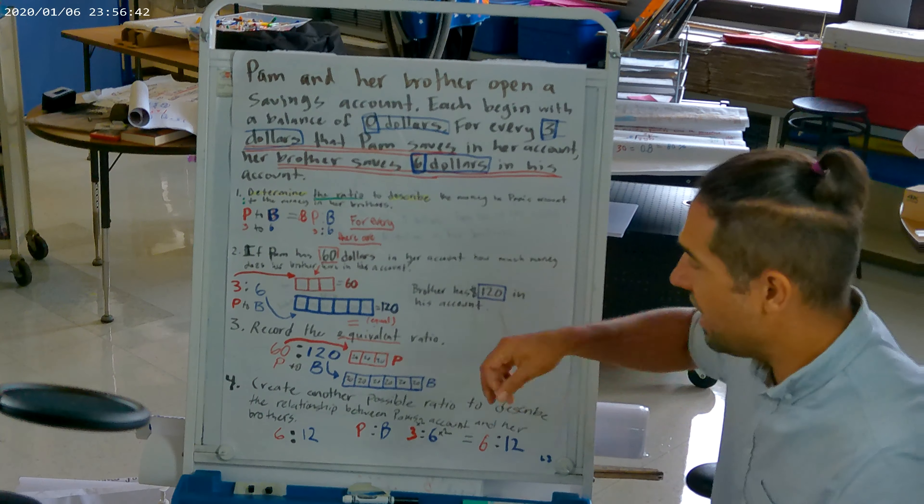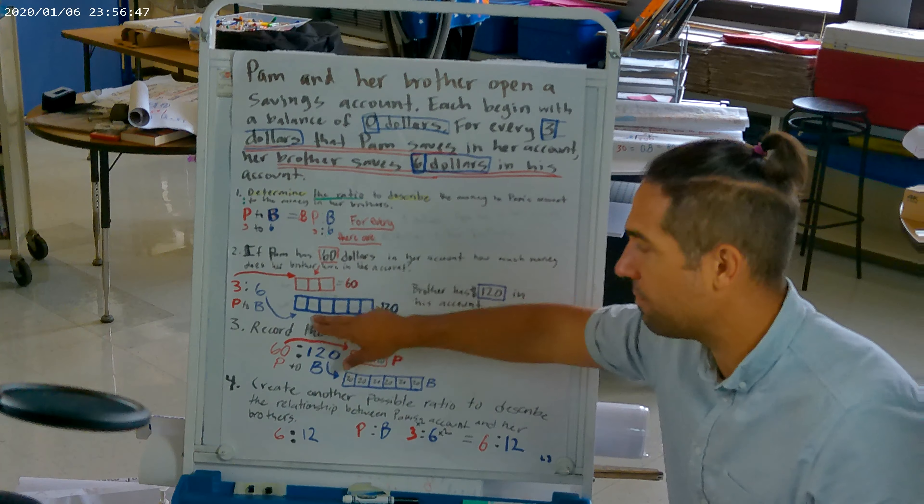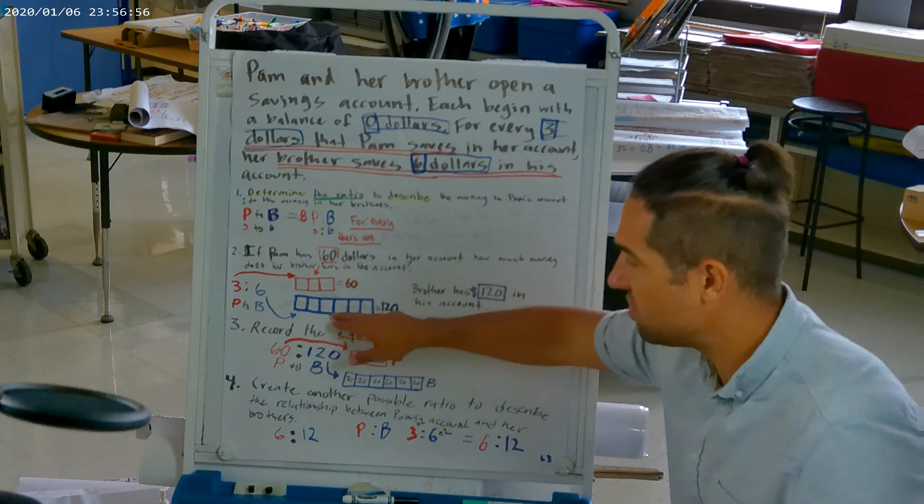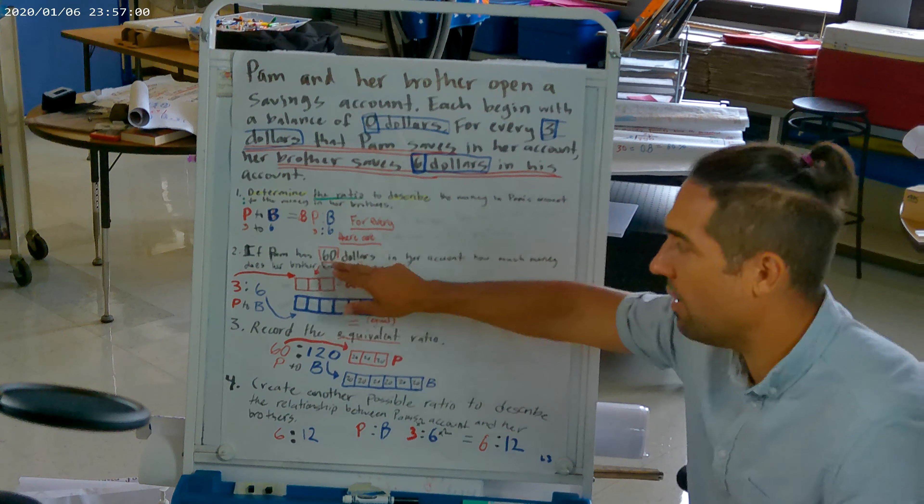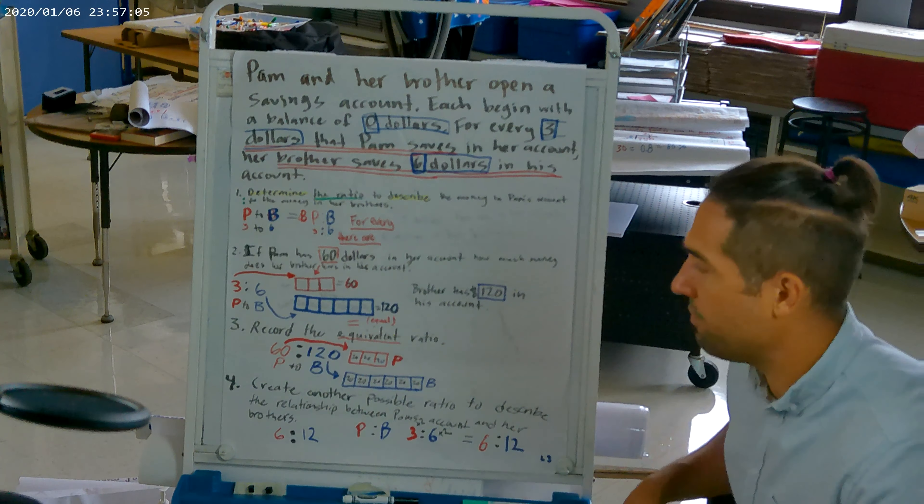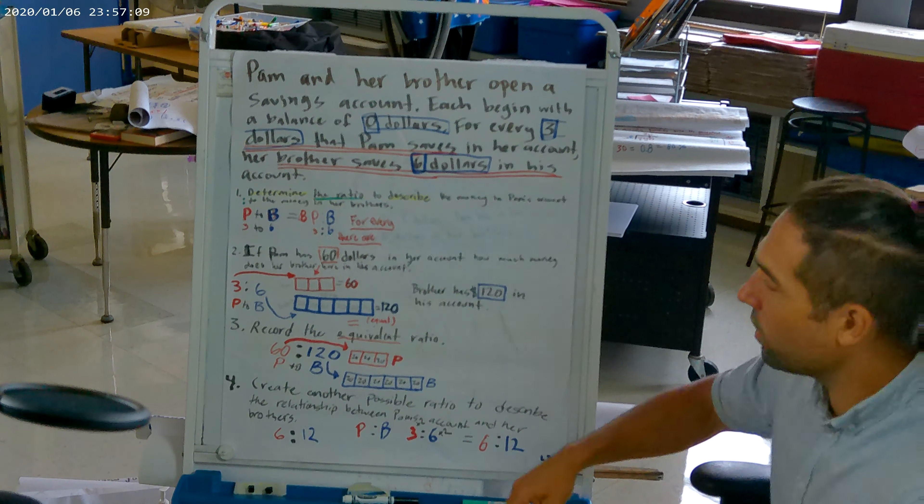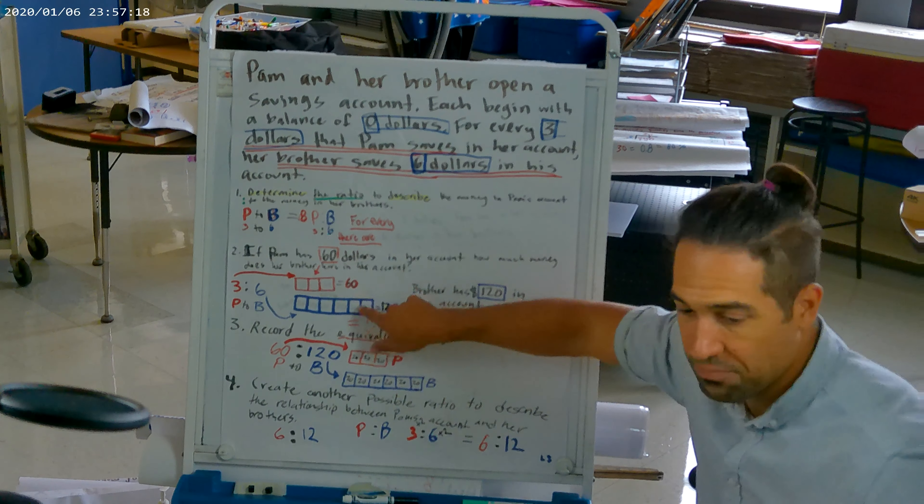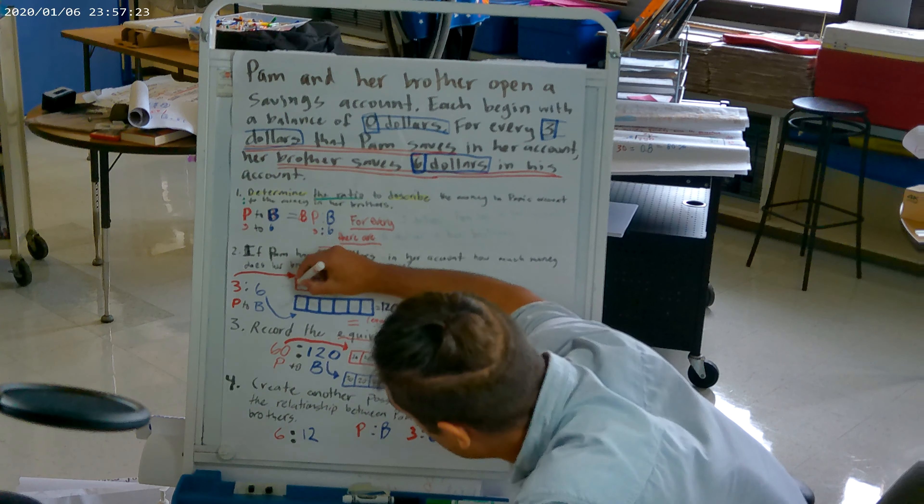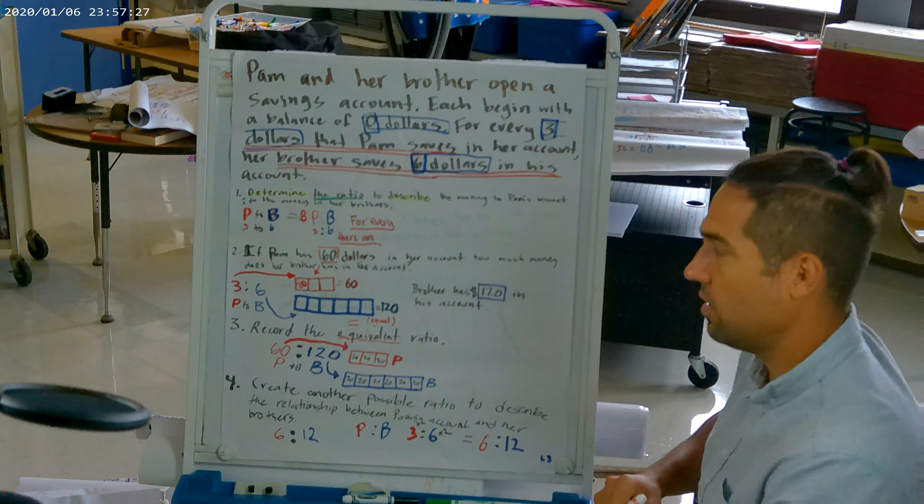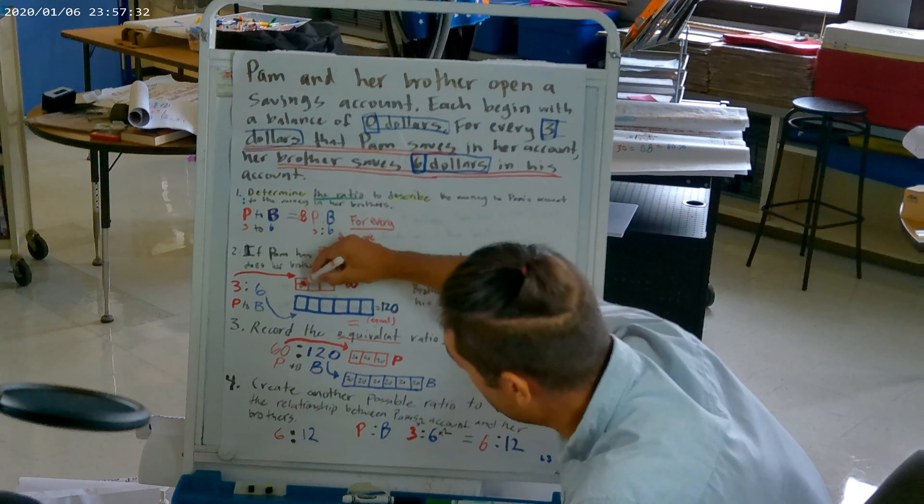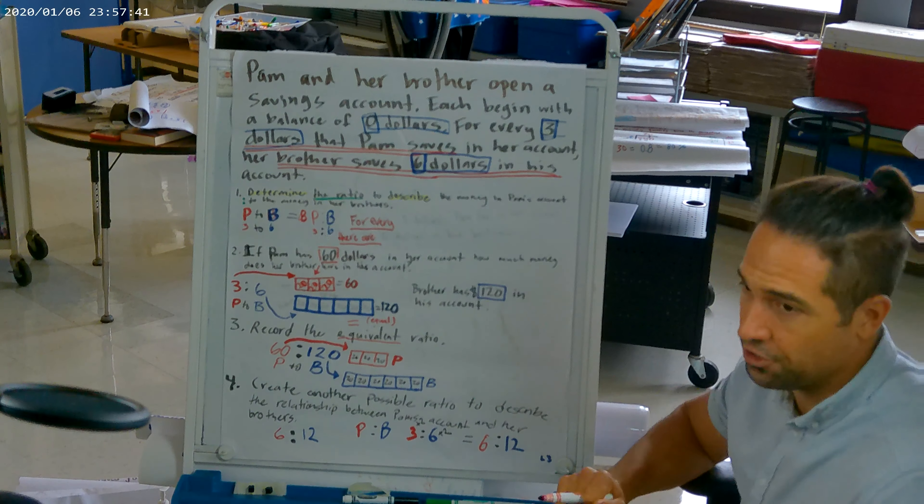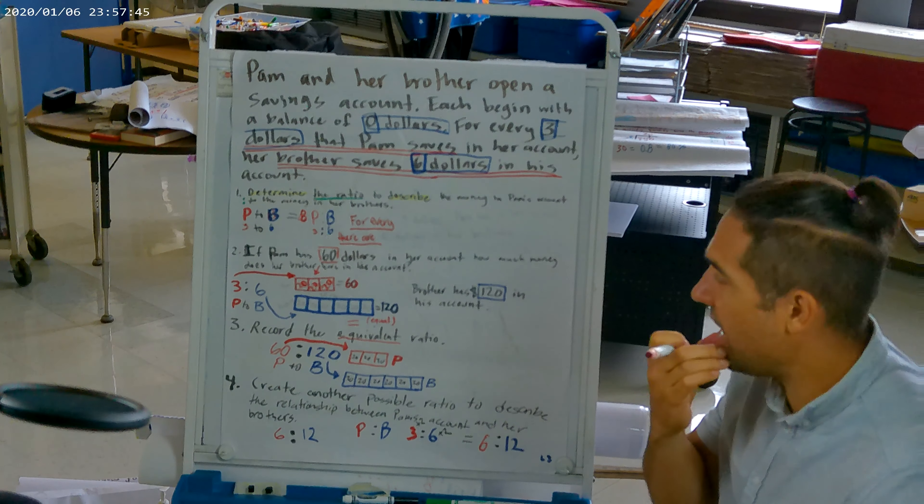I drew out three squares or a tape diagram using two lines to make three spaces. And then for her brother, her brother had six. For every three Pam had, her brother had six. So we went ahead and we made one, two, three, four, five, six squares or a box with five lines in it to give us six squares. We know how much money Pam has. She has $60, but we're left wondering how much does her brother have? So in order for Pam's three to be equivalent to 60, each one of those squares needs to have 20.